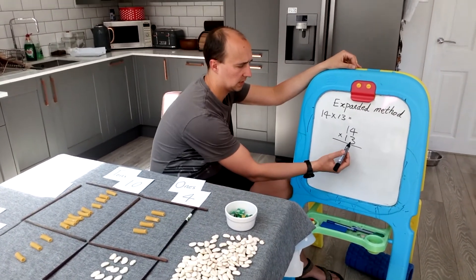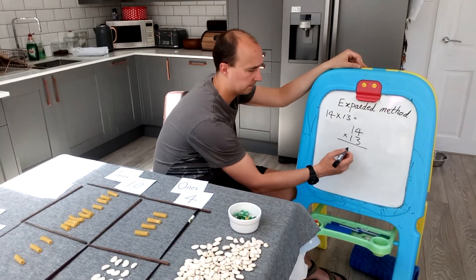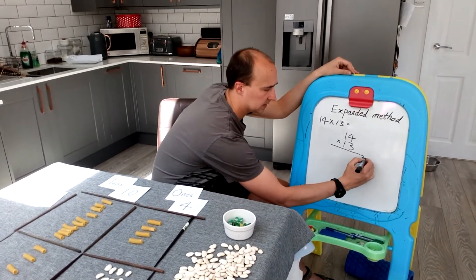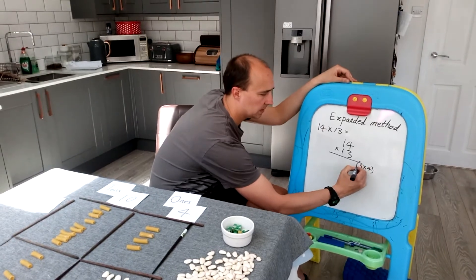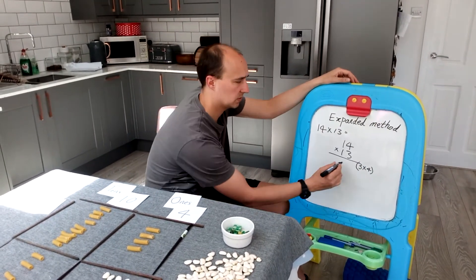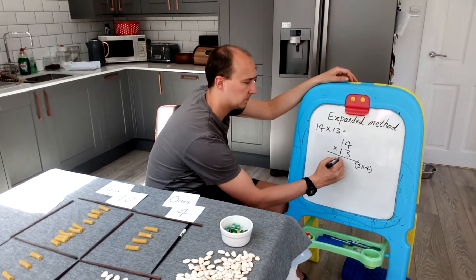And we're going to start here with 3 multiplied by 4. So I'm just going to write it in brackets, and if the children are using squared paper, just try and use one digit per box. So 3 times 4 is 12.